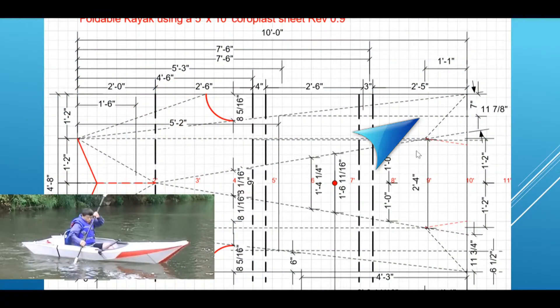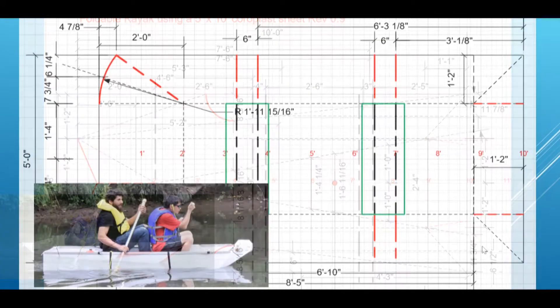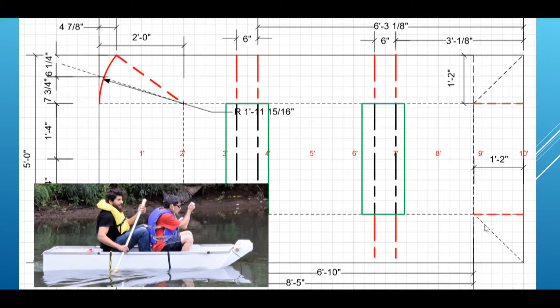With the pointed stern, I don't have the fold line. Flat stern, I have to add two fold lines.